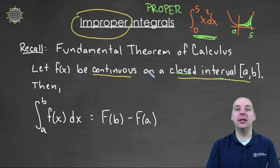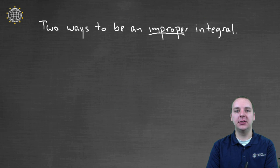I'm more interested in this video about integrals that are improper, in other words, ones that don't satisfy all the necessary criteria. So there's two ways for an integral to be improper. So what are those two ways?